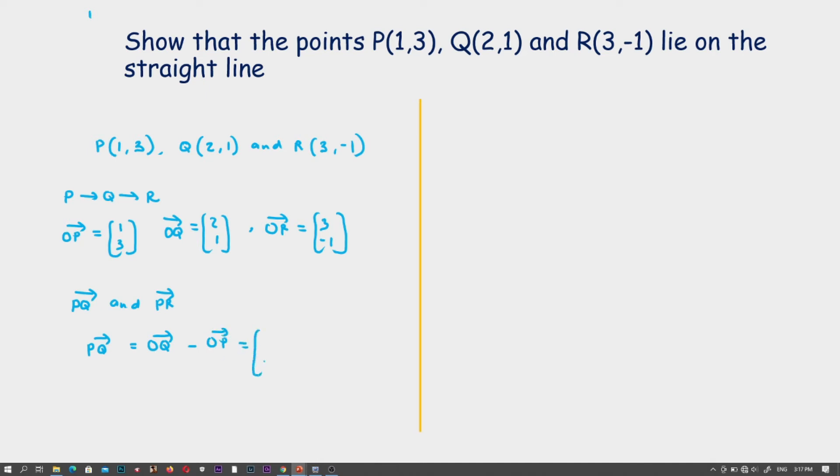We substitute it here. Our OQ is (2,1) from the data above. We are going to subtract the first point, that is OP which is (1,3). So 2 minus 1 gives us 1, and 1 minus 3 gives us -2. Therefore, PQ is (1,-2).